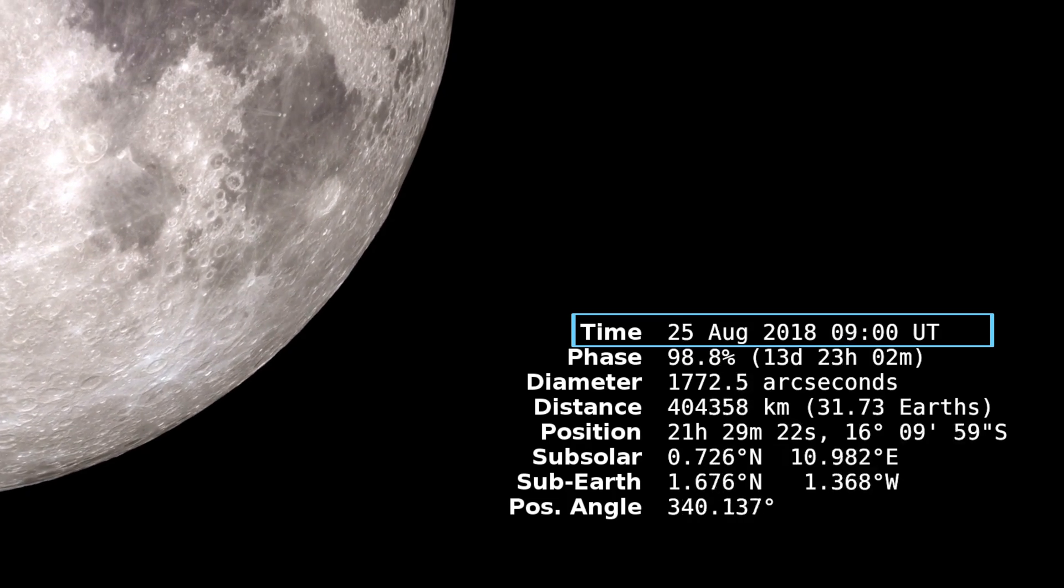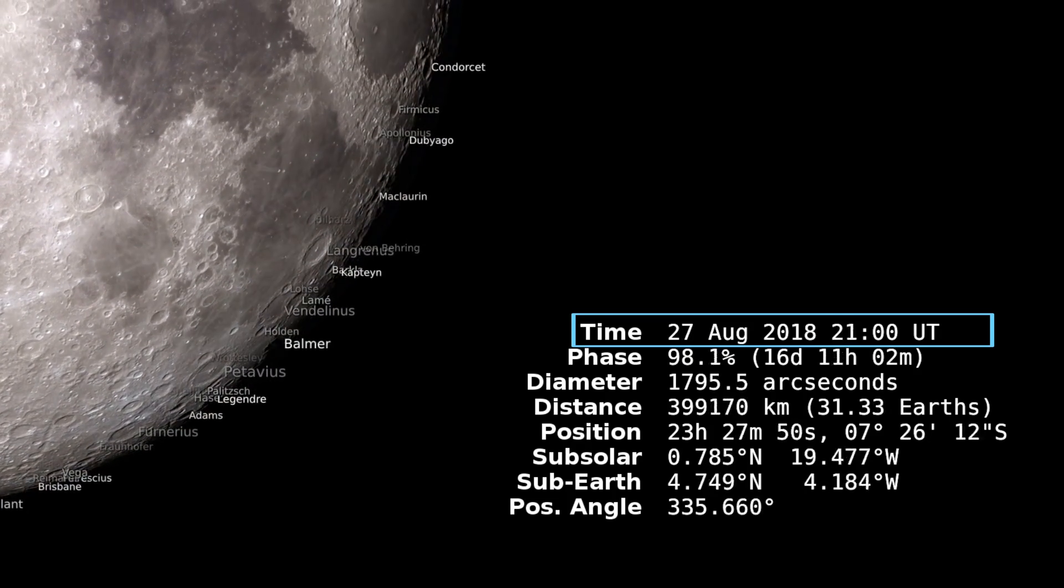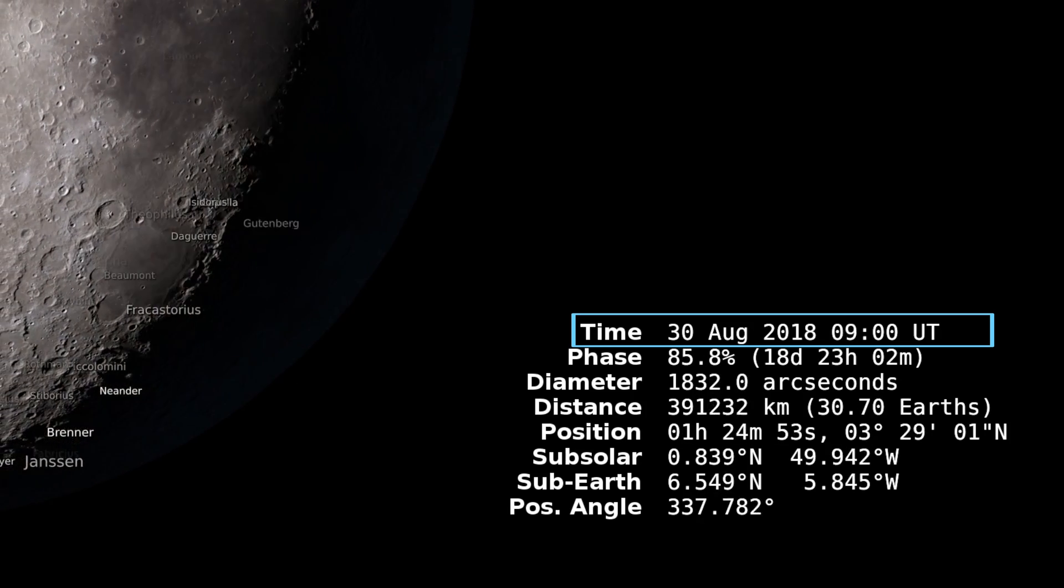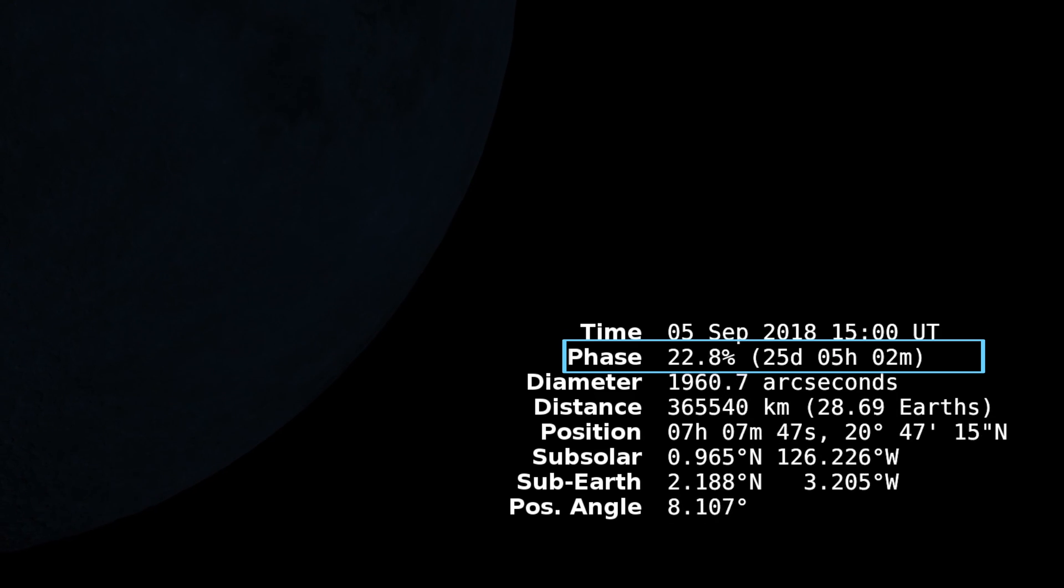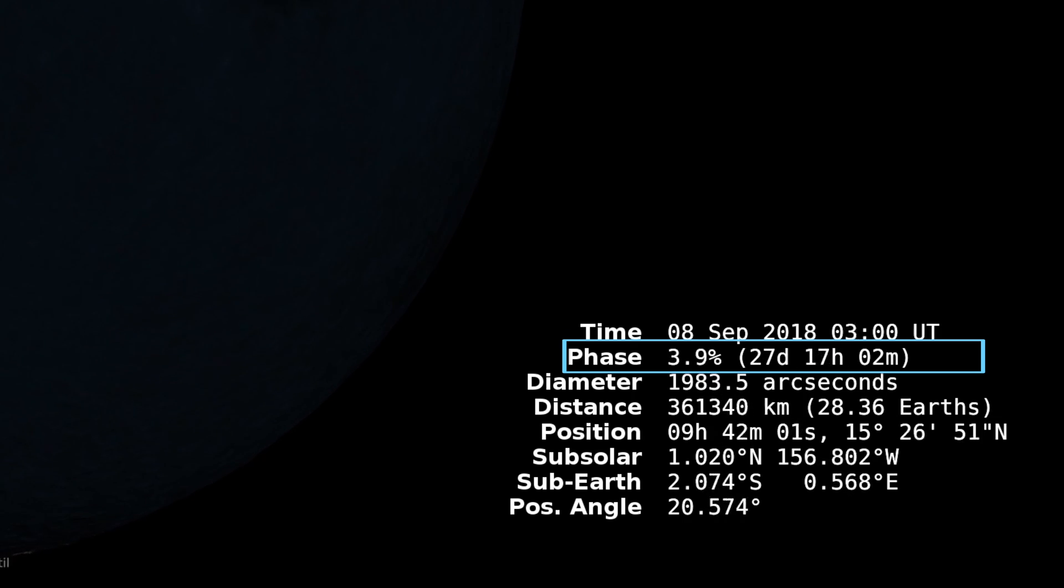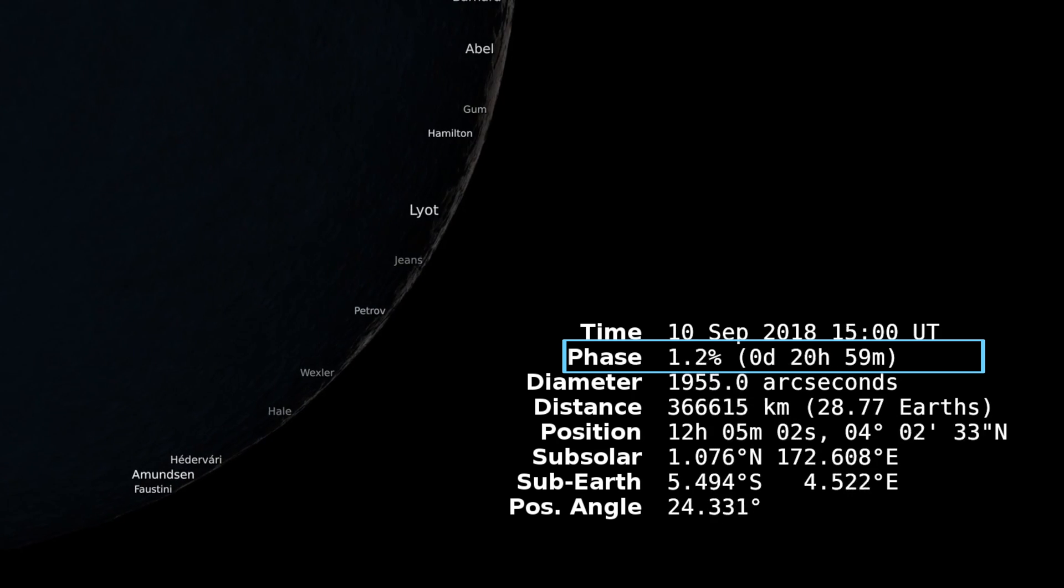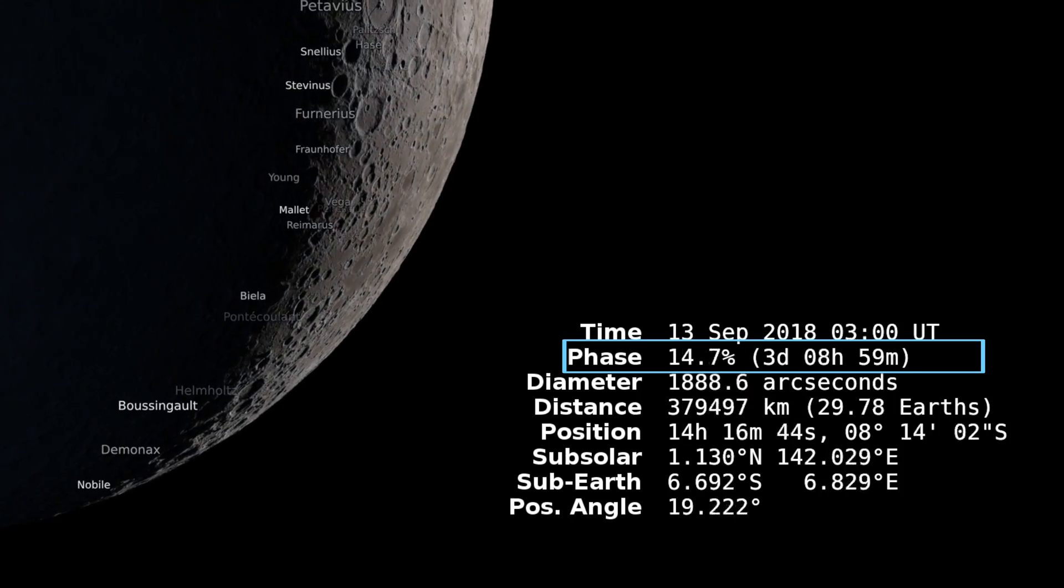The time is very self-explanatory. That just tells you the time of day that it is, day, month, year and universal time. Phase is how much of the moon surface is illuminated or how much of the moon face towards us is illuminated and you can see it there to the right of that how old it is in days.